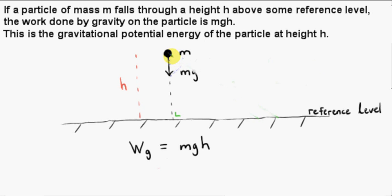What's even more interesting is that the path doesn't have to be a straight line. We could imagine the particle moving along any kind of curve. We will find that the work done by gravity on the particle as it moves along here, down to the reference level, is also given by mgh.